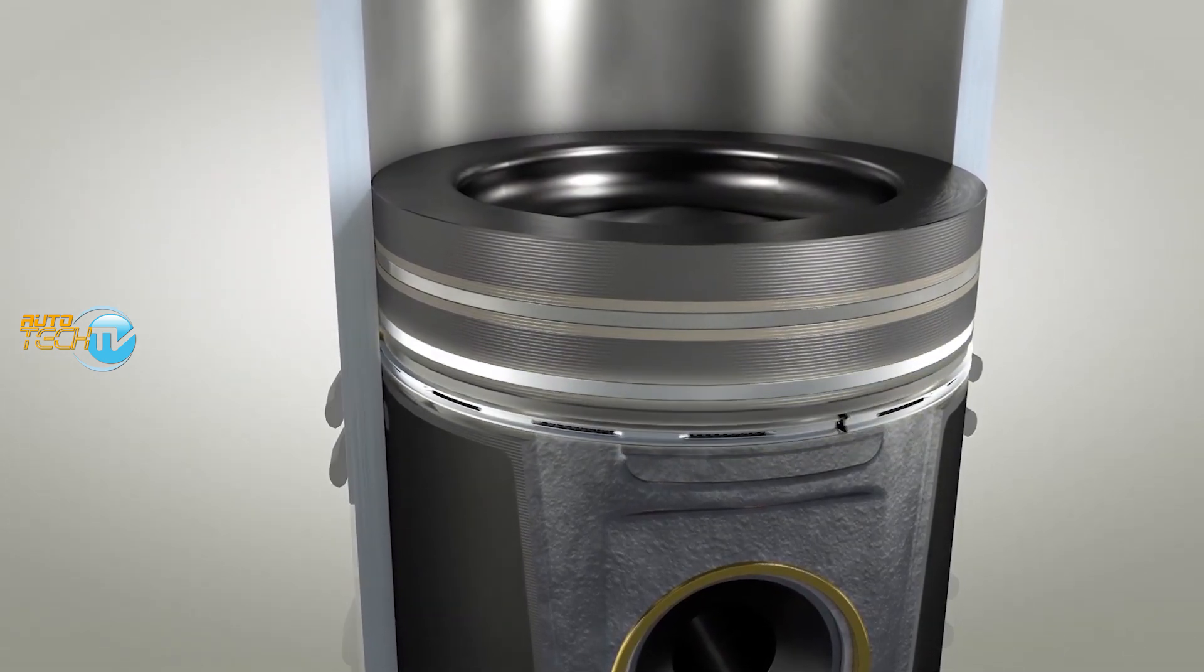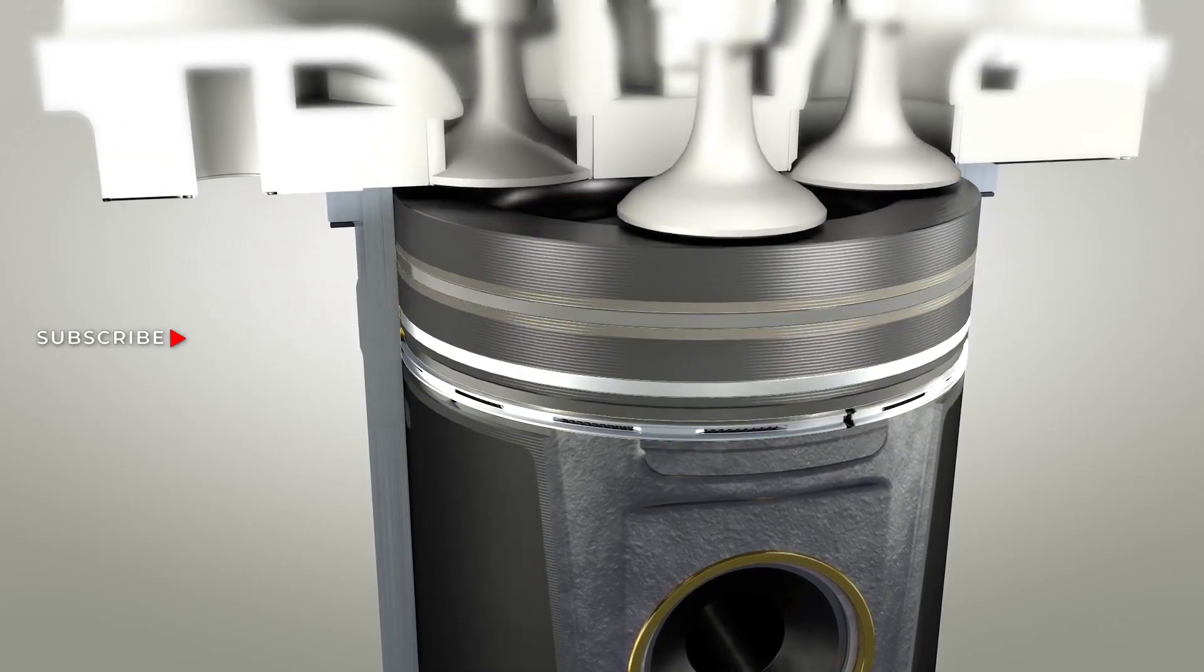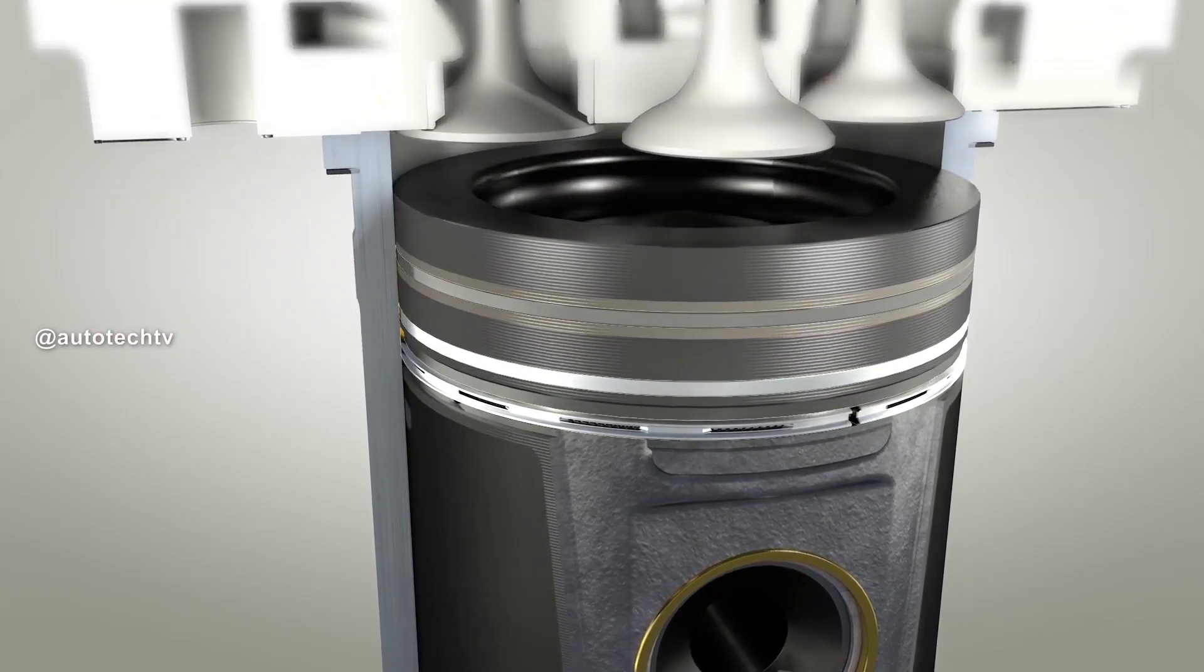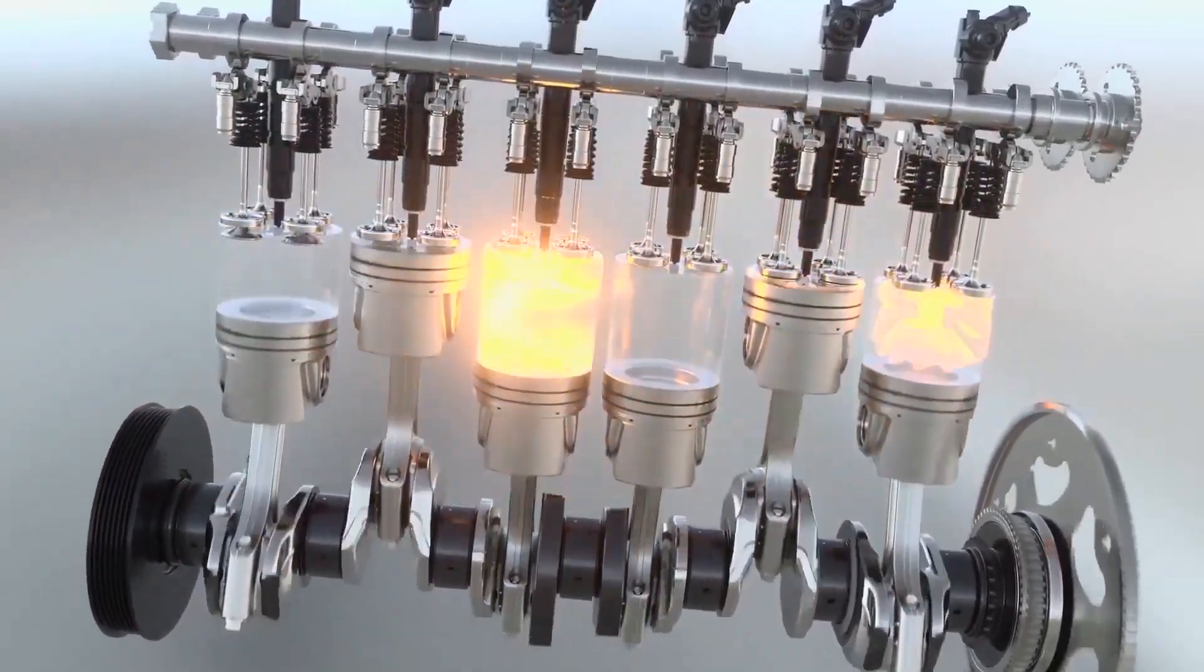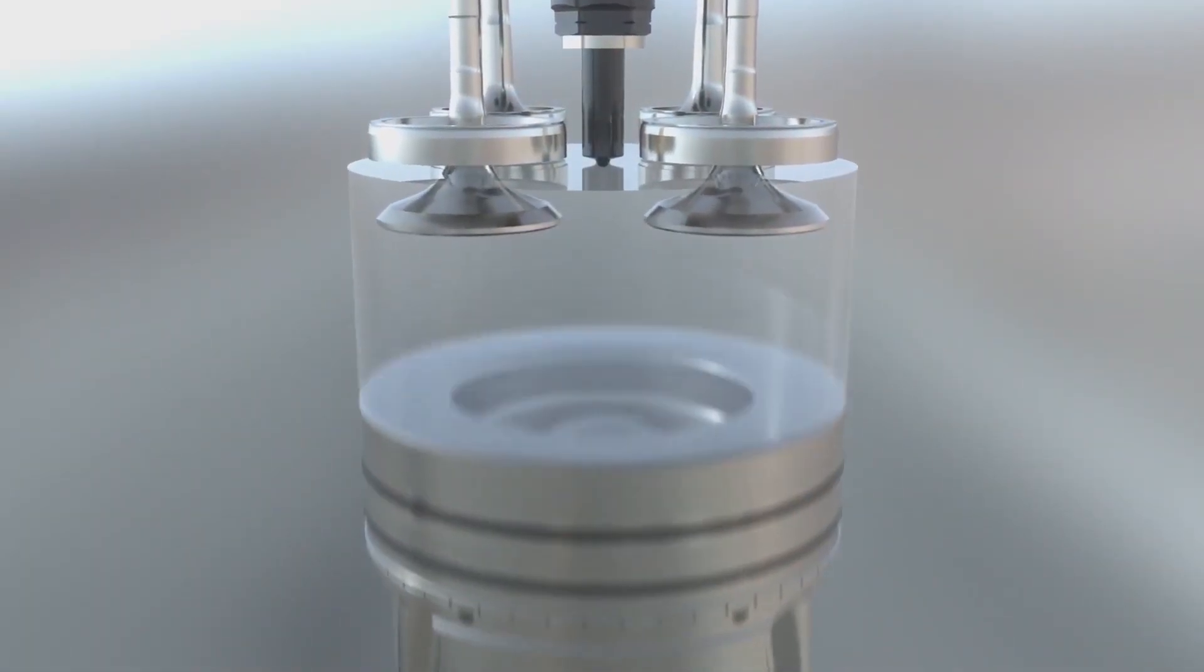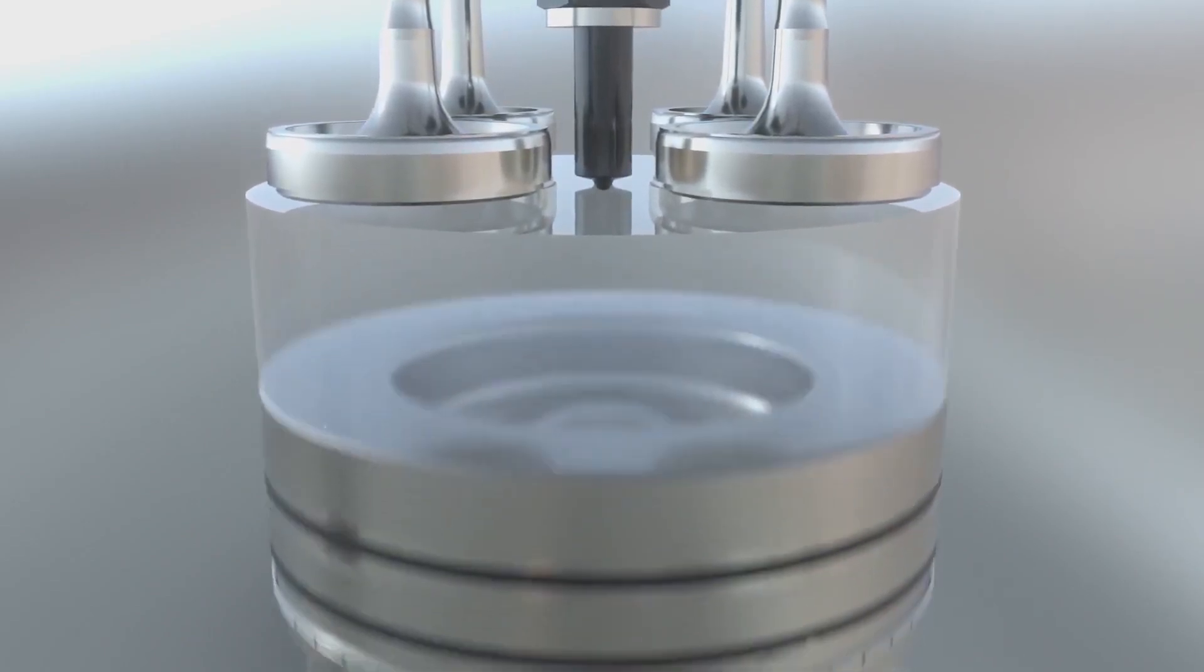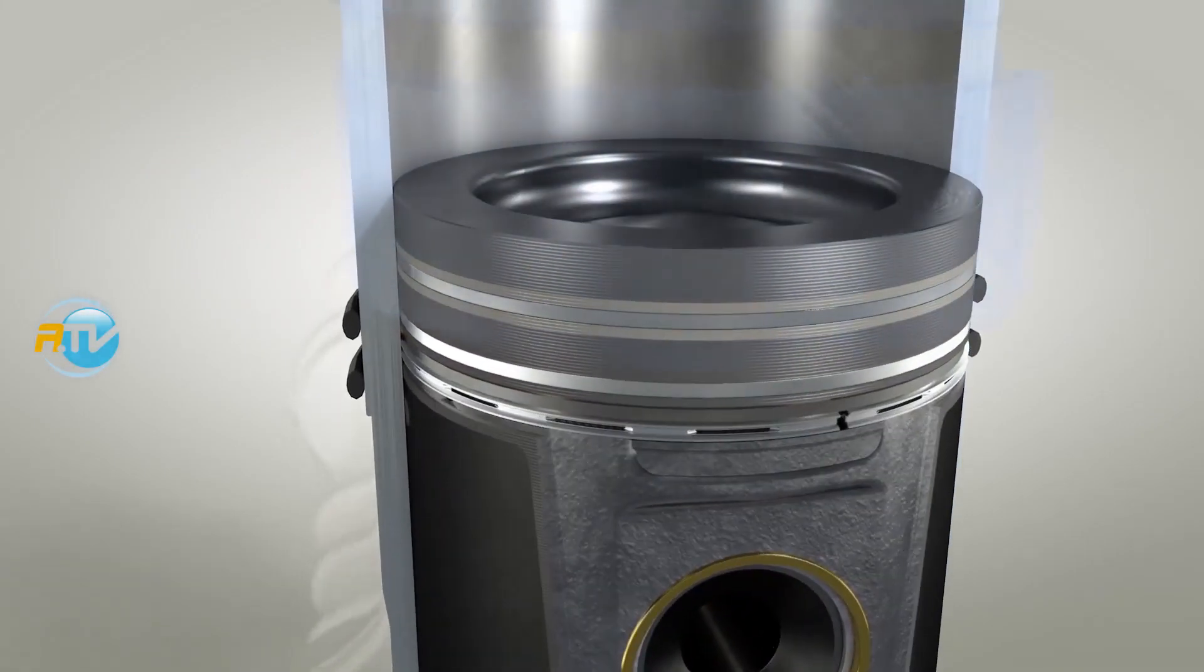Its function is to seal in such a way that the gases produced by the combustion don't escape and go towards the crankcase, but that they take care of pushing the piston down. Those three rings absolutely need to have oil present; otherwise, they would end up being worn down.